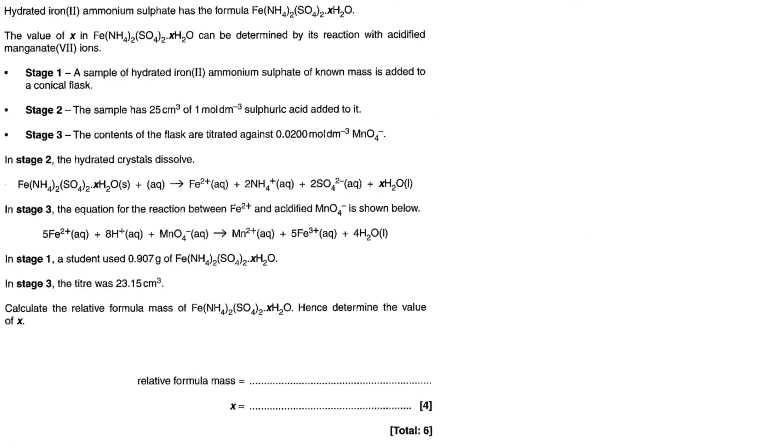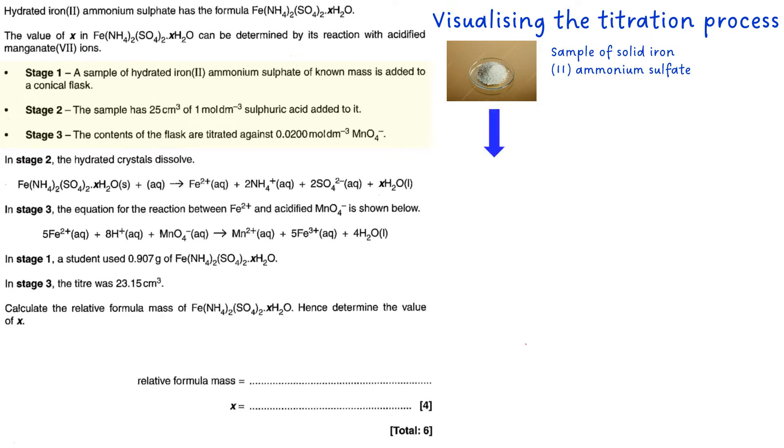So let's look at this example. Instead of reading it all, I'll just go through various stages of it. Let's visualize the titration process to start with. So you start off by having a sample solid iron(II) ammonium sulfate. And what happens is this is dissolved in sulfuric acid, one mole per decimetre cubed, 25 centimetres cubed.